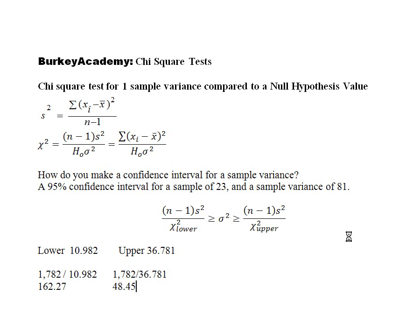So what does this mean? Well, we have just made a 95% confidence interval where we are 95% sure that the population variance is something between 48.45 and 162.27.